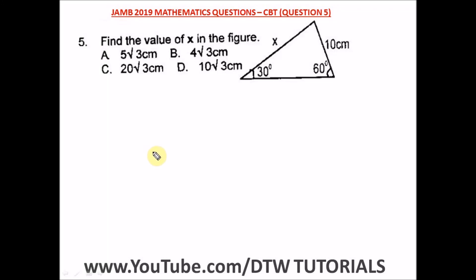Question 5 of the JAMB 2019 mathematics exam, the UTME CBT exam, says find the value of x in the figure. So we have this figure here. Now you know the sum of angles in a triangle